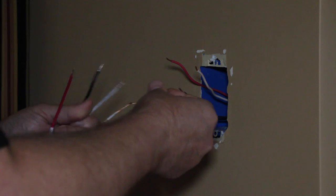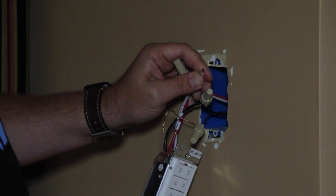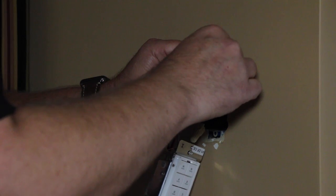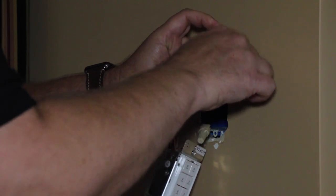If I had multiple black wires on the switch, I'd need to figure out which one is always on, that's called the line, and which one goes to the light, known as the load.